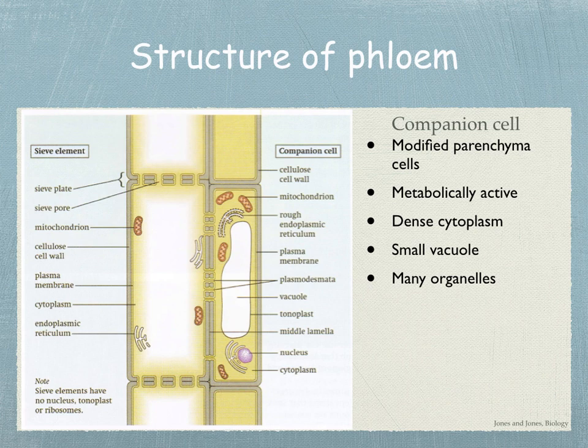These two cells — the companion cell and the sieve element — are so closely related that if one dies, the other cell dies.